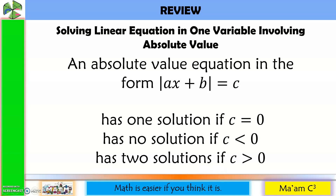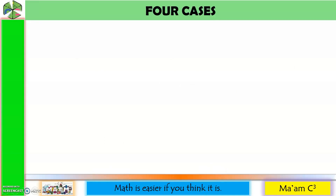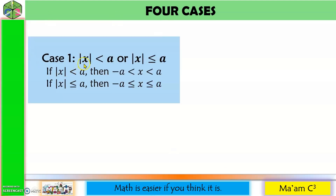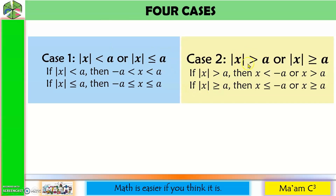In solving linear inequalities in one variable involving absolute value, we have to consider four cases. Case 1: if the absolute value of x is less than a, we form the intersection of two inequalities — x is less than a, and x is greater than negative a. Less than may be replaced with less than or equal to. Case 2: if the absolute value of x is greater than a, we form the union of two inequalities — x is less than negative a, or x is greater than a.